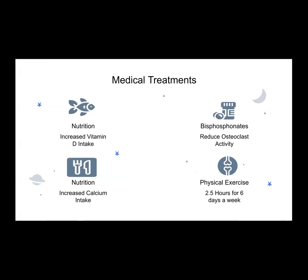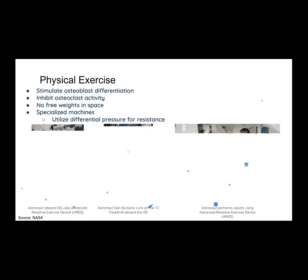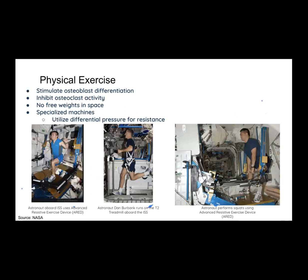Medical treatments include nutrition, pharmaceuticals, and physical exercise. Vitamin D and calcium are good options, found in milk, fish, and eggs. Bisphosphonates are a popular type of medication commonly prescribed for osteoporosis and other bone density conditions on Earth, and they work by reducing osteoclast activity. Physical exercise is also a heavily used option but comes with drawbacks — it is effective at inhibiting osteoclast activity on Earth, but requires specific machines. Free weights are obviously not an option in a microgravity environment, so astronauts use negative pressure for resistance. Osteogenic stimulus from exercise has been inadequate to maintain bone mass due to insufficient load or duration.